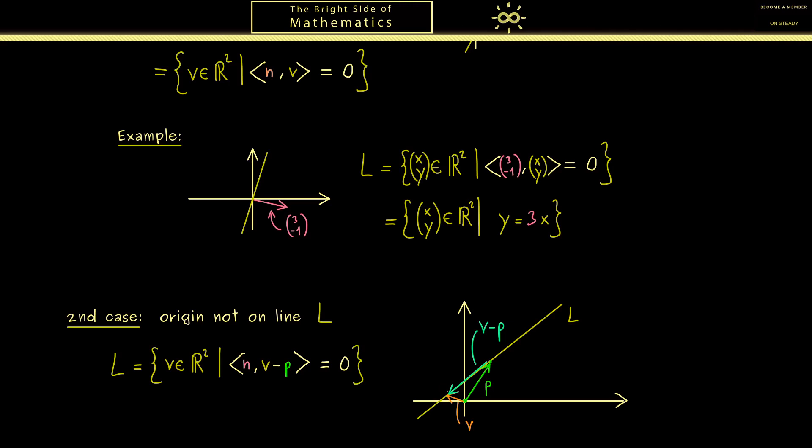So you should see the only thing we have to put in here is a normal vector N and a vector P. And then these two vectors describe the whole line.